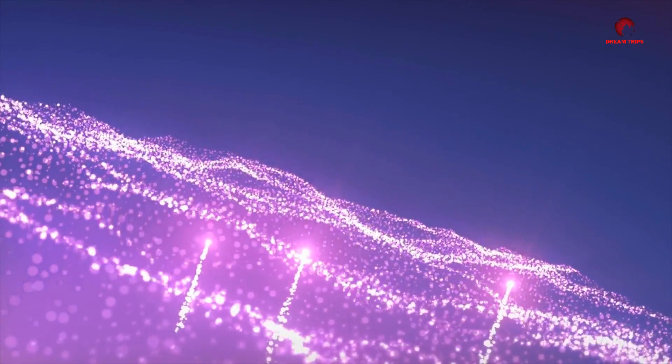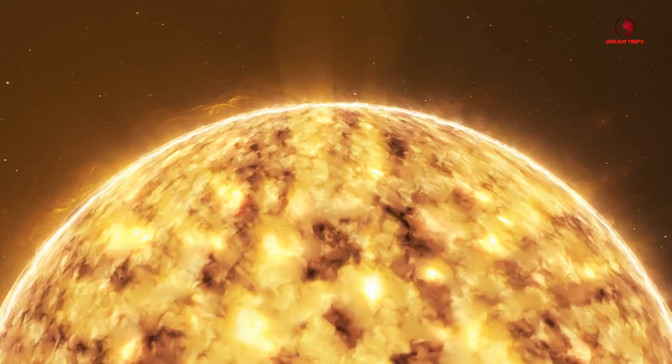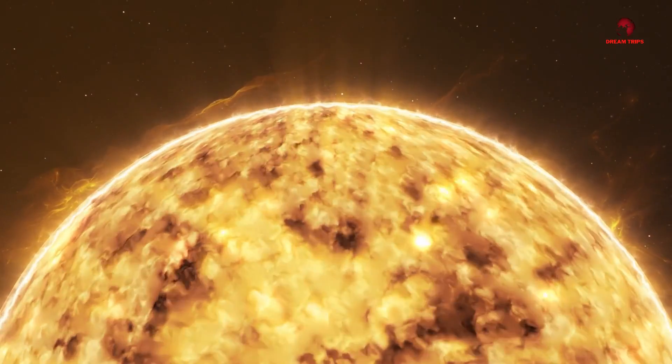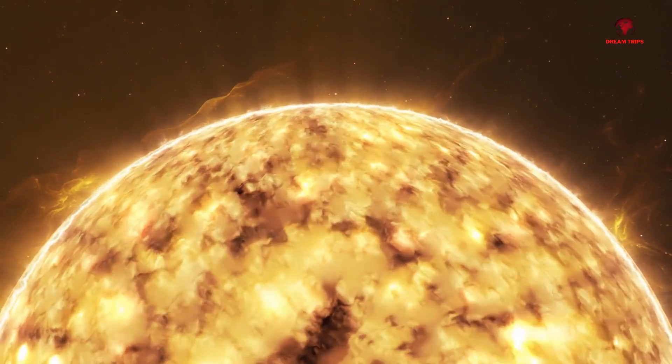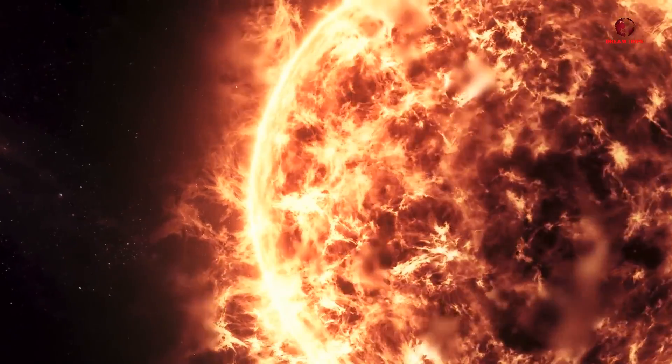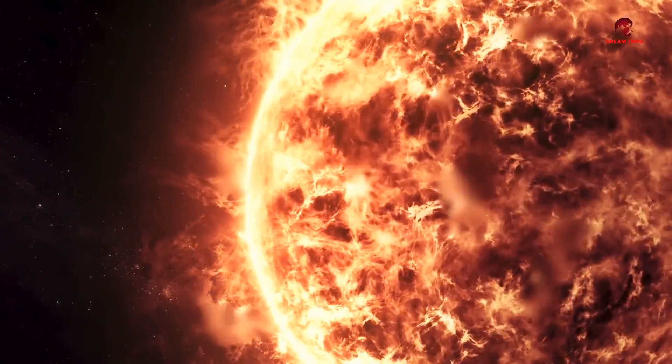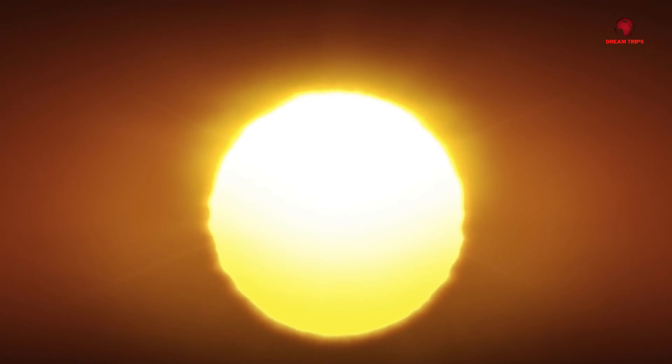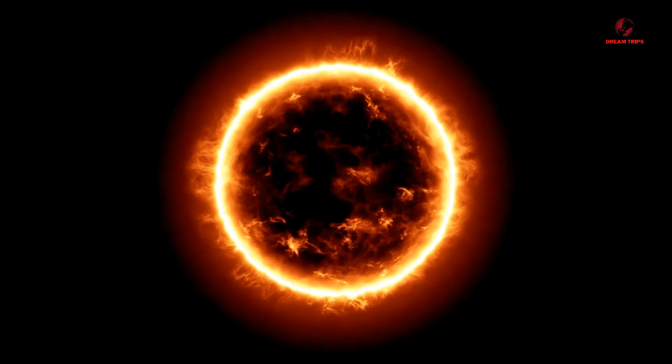The impact of a star on its orbiting planets is profound, affecting everything from their climates to the potential for life. Orbiting our sun, Earth finds itself in the so-called Goldilocks zone. Not too hot, not too cold, but just right for liquid water and life as we know it. The sun's stable output of light and warmth has nurtured life on Earth for billions of years, its gravitational pull keeping our planet in a nearly circular orbit that ensures relatively stable conditions.